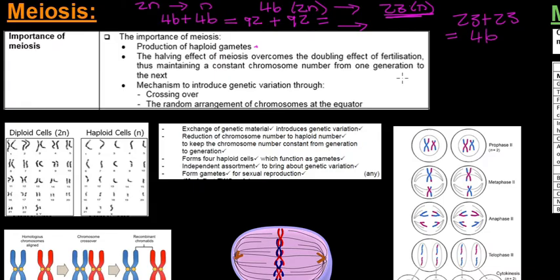Another reason that meiosis is important is for genetic variation, so that we all look a little bit different from each other. That's also why you look a little different to your siblings — even though you can see you are related, there is a lot of genetic variation involved. This happens during crossing over, which takes place during prophase one, and then random arrangement of chromosomes at the equator, which takes place during metaphase two.